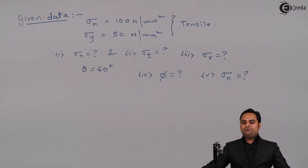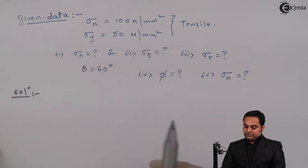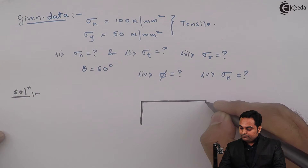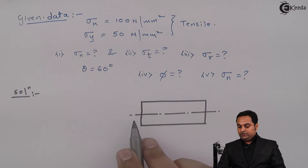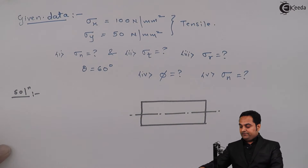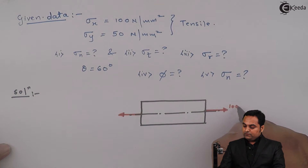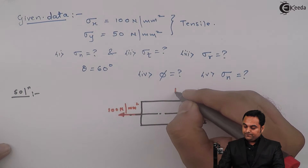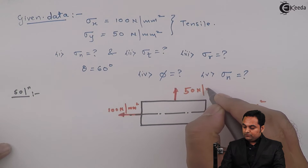Now in the solution part, I'll first draw the diagram to explain it in a more effective manner. Here is the member and it is subjected to stresses in both X and Y directions, and they are tensile — so along X it is 100 N/mm² and along Y it is 50 N/mm².